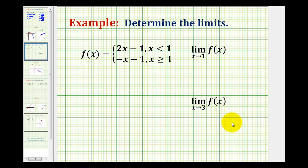Let's take a look at two more limits analytically that involve a piecewise defined function. Notice that when x is less than 1, the graph would be y equals 2x minus 1, and when x is greater than or equal to 1, the graph would be y equals negative x minus 1.